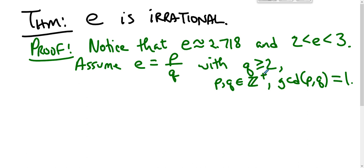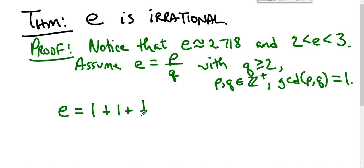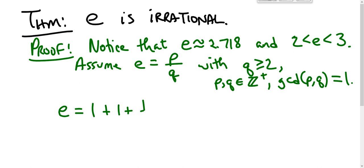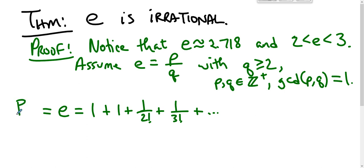So which definition do we use for E? Well, E equals 1 plus 1 plus 1 over 2 factorial plus 1 over 3 factorial plus and so on. And this number is P over Q.